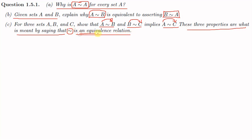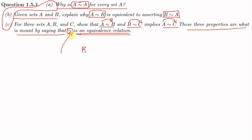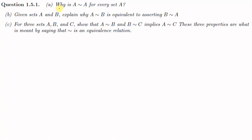A relation R is said to be an equivalence relation if it satisfies three conditions. First, A is related to A for every element A. Second, if A is related to B then B is related to A. Third, if A is related to B and B is related to C then A is related to C. Those are the three things given in the three parts of this question, and the three parts together establish that this relation is an equivalence relation.